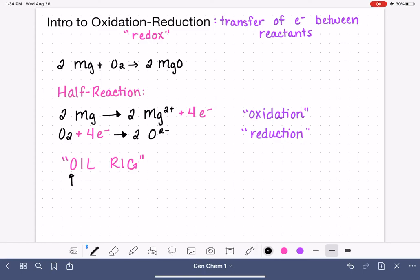In the oil rig trick, the O stands for oxidation. Oil stands for oxidation is loss, specifically, of electrons. And then in the rig part of it, R stands for reduction. Reduction is the gain of electrons.